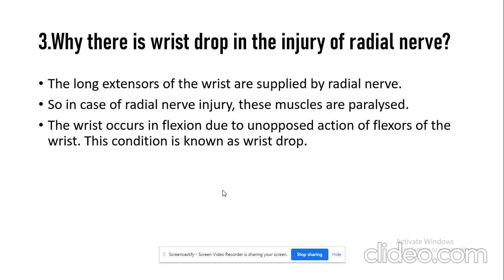The next question is: why is there wrist drop in injury of the radial nerve? The long extensors of the wrist are supplied by the radial nerve and are present in the posterior compartment of the forearm. In case of radial nerve injury, these muscles are paralyzed. The wrist then occurs in flexion due to unopposed action of the flexors of the wrist, and this condition is known as wrist drop.